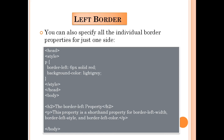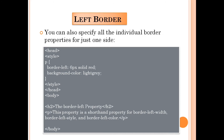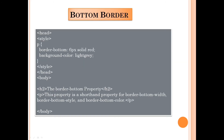You can also specify all individual border properties for just one side. For example, border-left: 6px solid red sets the left border. And border-bottom: 6px solid red sets the bottom border. You can try these by yourself or wait for my notepad explanation.